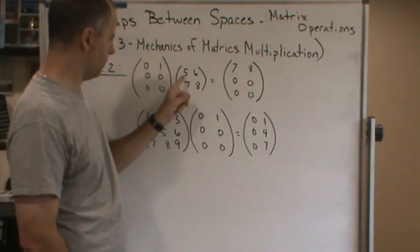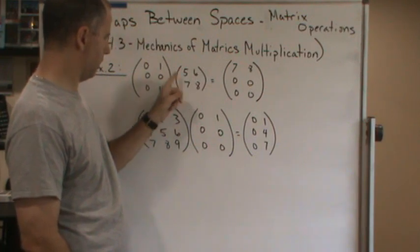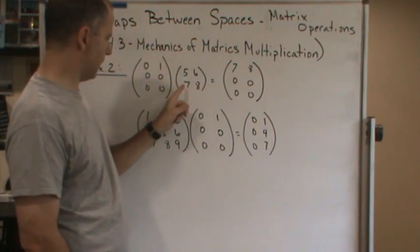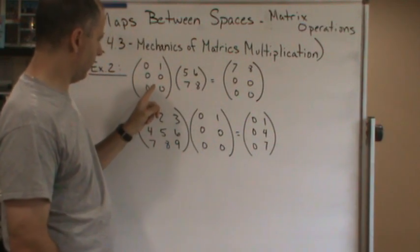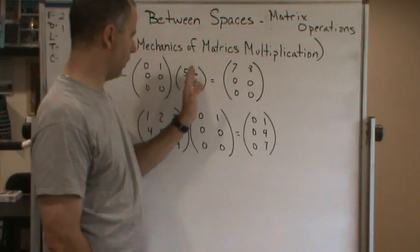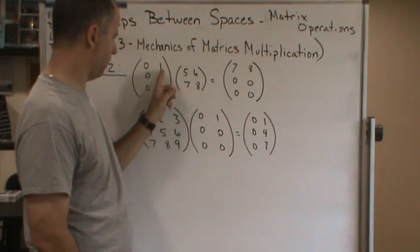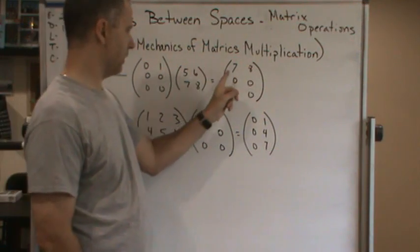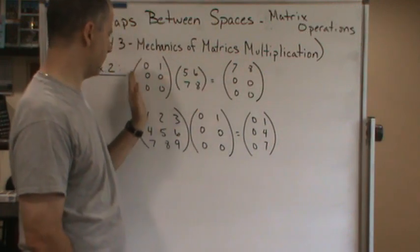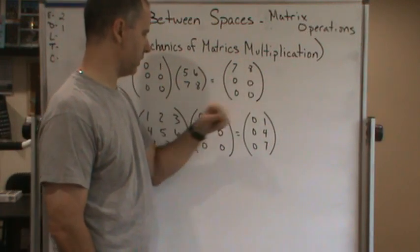This is going to be zero times this, plus one times this, so you get seven. And if you move over to the next one, it's going to be zero times this, plus one times this, so you get seven, eight across. So what it does is repeat this row, and everything else is zero.